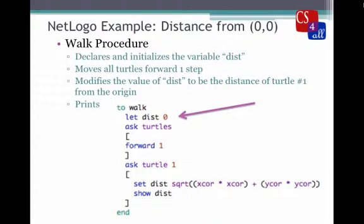Next, we have the walk procedure. In this procedure, we declare a variable called dist with the let command and then we initialize its value to zero. So the command looks like this: let dist 0.